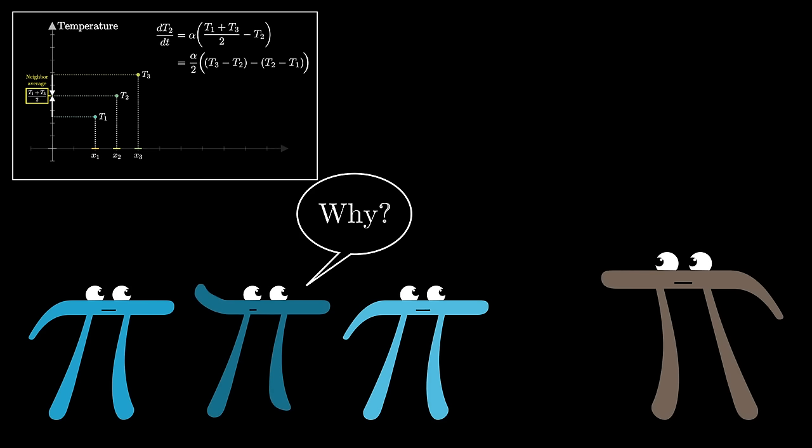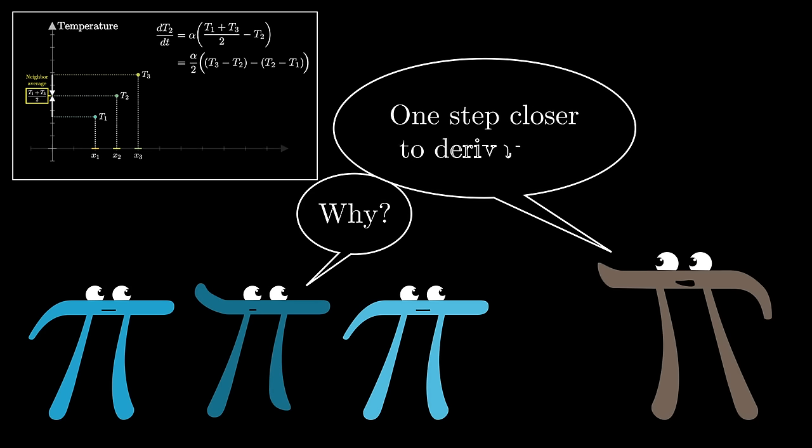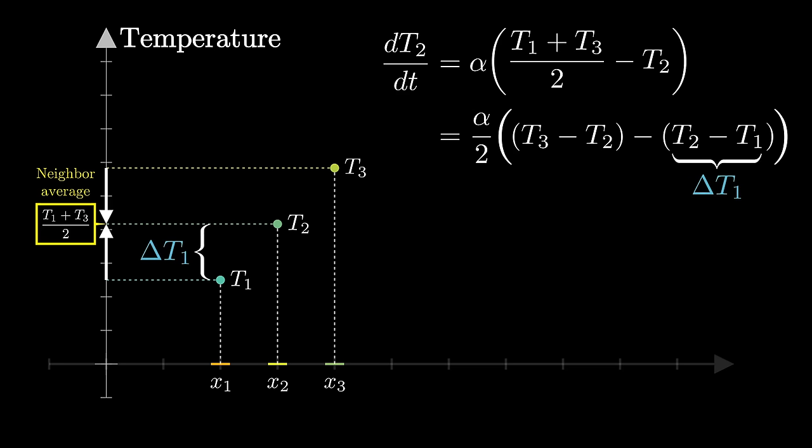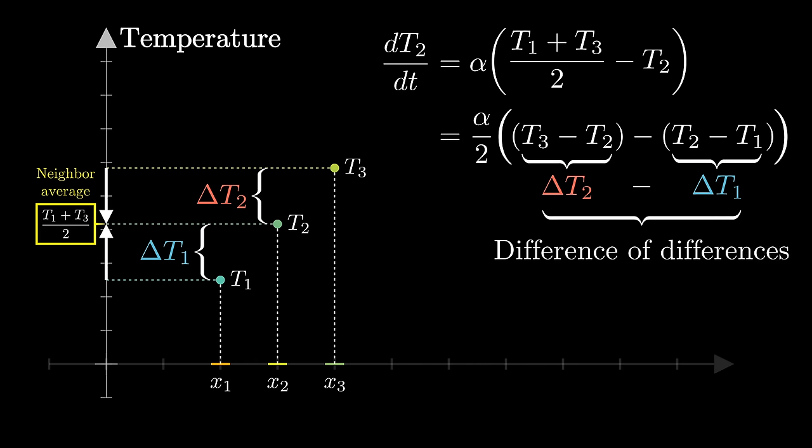Like I said, the reason to rewrite it is that it takes us a step closer to the language of derivatives. In fact, let's go ahead and write these guys as delta t1 and delta t2. It's the same value on the right hand side, but we're adding a new perspective to how to think about it. Instead of comparing the average of the neighbors to t2, we're thinking about the difference of the differences.